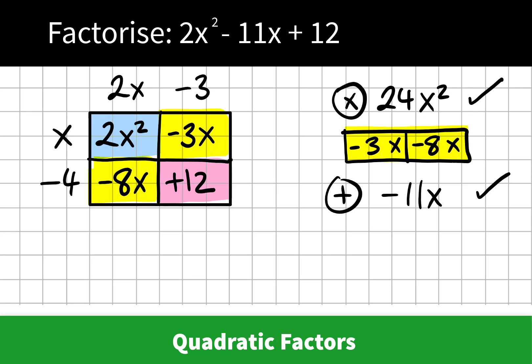Or negative 3 by negative 4 gives us positive 12. So there are a couple of ways of thinking about this, and you will know if your answer is correct. So the factors of our given quadratic expression are 2x minus 3 by x minus 4.